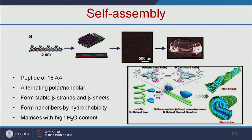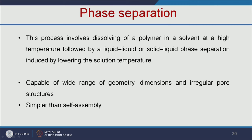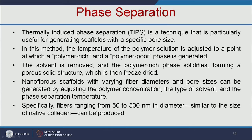When using peptides of 16 amino acids or more with alternating polar and non-polar residues, they form stable beta strands and beta sheets, producing nanofibers with good hydrophobicity and hydrophilicity. Using self-assembly, we can make three-dimensional nanofiber scaffolds. The next technique is phase separation.